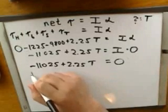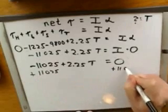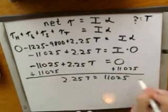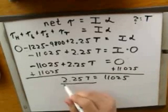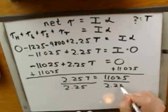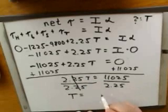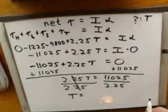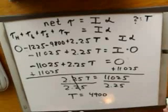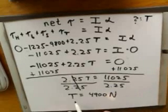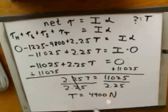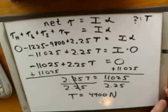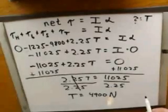This should be pretty simple algebra. We add 11025 to both sides, trying to get the tension by itself. We divide both sides by 2.25. We calculate 11025 divided by 2.25, which gives 4900. Since we've been using standard units, our answer comes out in newtons. Remember that tension is a force, not a torque, so it should come out in the units for force, which are newtons. So we've answered our question — the tension force is 4900 newtons.